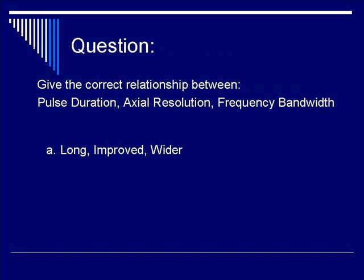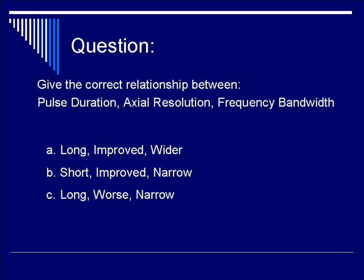Is it A, long, improved, and wider? Is it B, short, improved, narrow? Is it C, you get a longer pulse duration, you get worse axial resolution, and narrower bandwidth? Or finally, is it D, you get short, worse, or wider? You may pause the video to consider your correct response and continue to get the right answer and explanation.